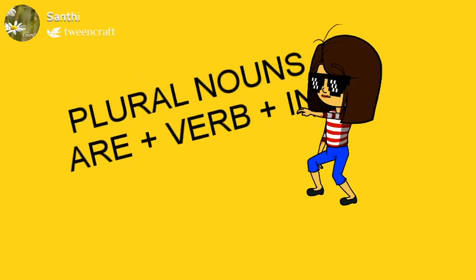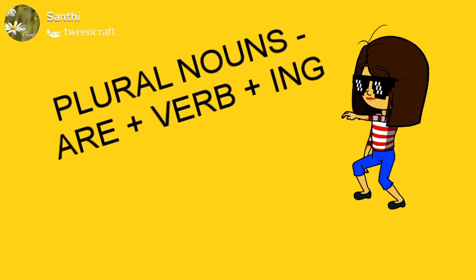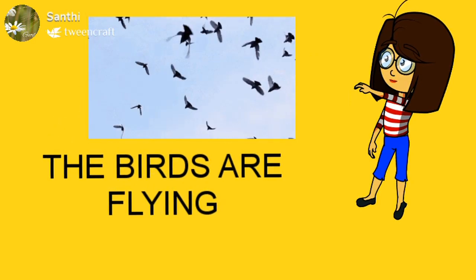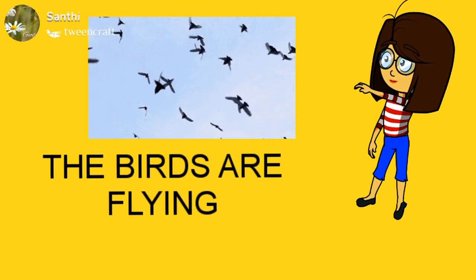For plural nouns, we have to use are and add ING with the verb. For example: The birds are flying.